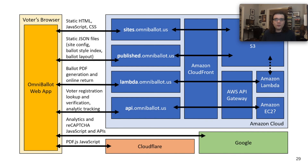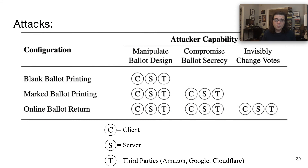So what did we find? The system is a large, relatively complicated web app that relies on a number of third parties to perform its services. The app dynamically fetches and runs JavaScript loaded from Amazon, Google, and Cloudflare, making all three companies — as well as Democracy Live itself — potential points of compromise for the election system. We also found that the system is not end-to-end verifiable and not coercion-resistant or receipt-free. We found that attackers could manipulate the ballot design, compromise ballot secrecy, and invisibly change votes. The only thing that really prevented the client, the server, or any of these third parties from doing so was the use of physical media.